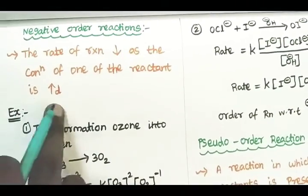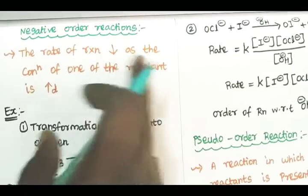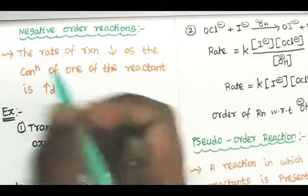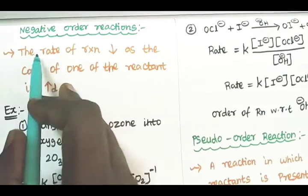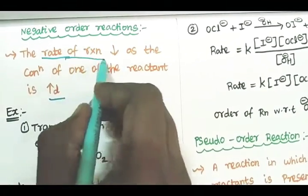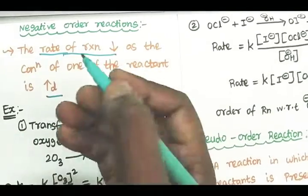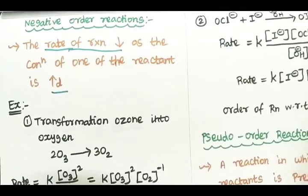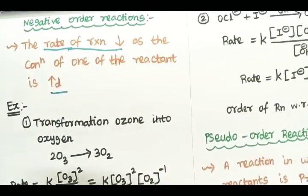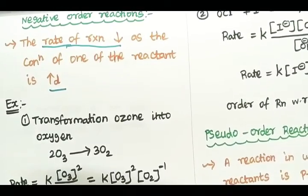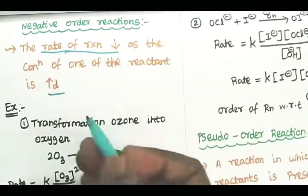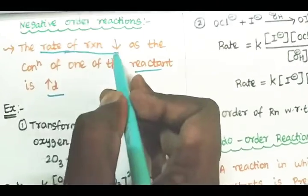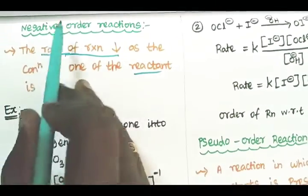Now, negative order reaction: the rate of reaction decreases as the concentration of one of the reactants is increased. As usual, if concentration increases, the rate of reaction increases. But in a negative order reaction, if the concentration of a reactant increases, the rate of reaction decreases — these are negative order reactions.